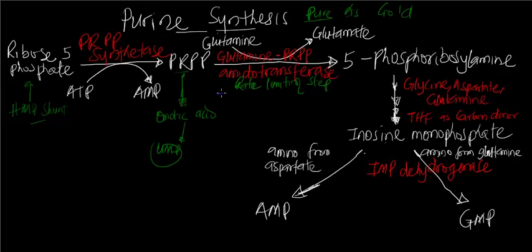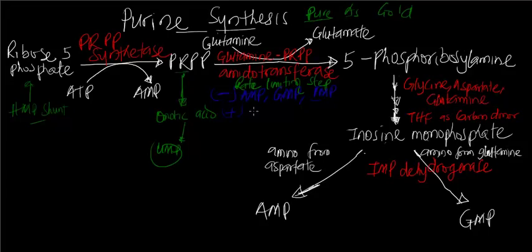One of the things that can inhibit this enzyme is AMP, GMP, and IMP. All these products from this pathway are actually regulating the production from this pathway — products trying to regulate the amounts being produced. If you have more than enough, you don't want to be producing much, so you can slow down or inhibit this conversion. The stimulant of this enzyme is PRPP itself, the substrate, which stimulates the conversion of PRPP into 5-phosphoribosylamine.